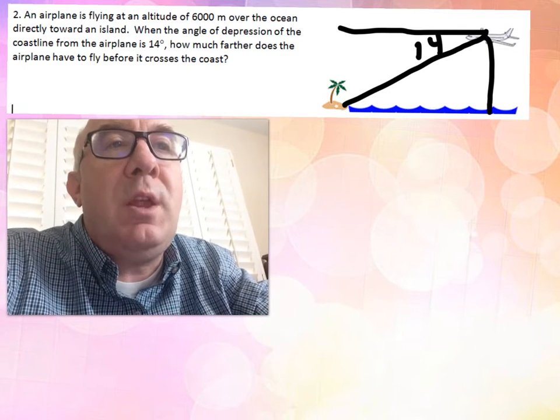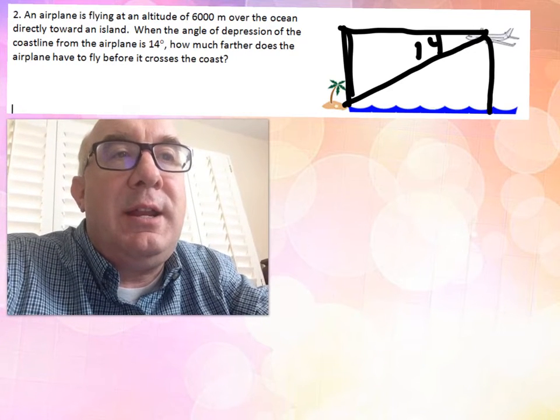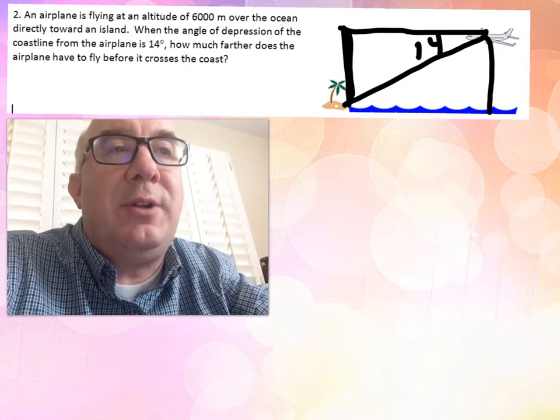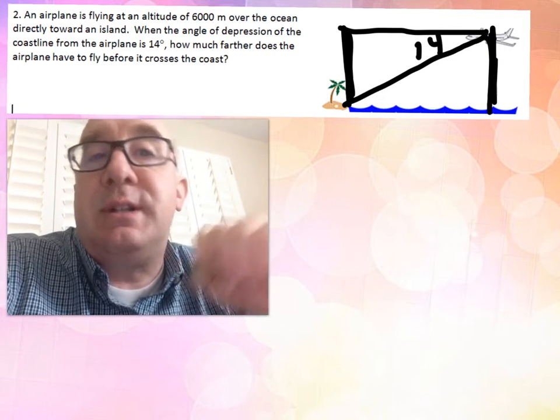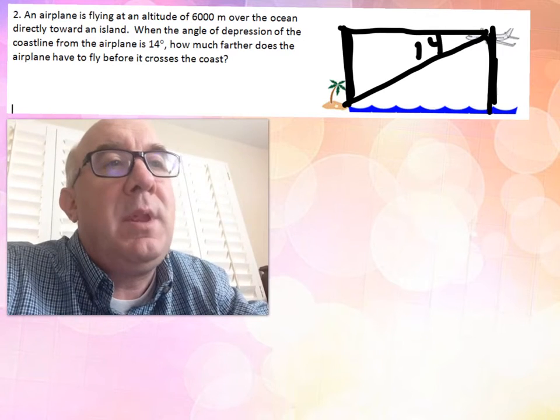Now another thing you can do: you can close this off. And again, this line here is also the same altitude as it is over here. So you can do the 6000 on either side. It's like a rectangle is what you formed. And if you want, you can bring the 14 down here and work within this little triangle right here.